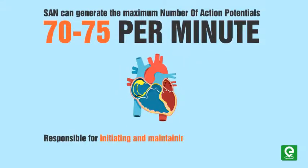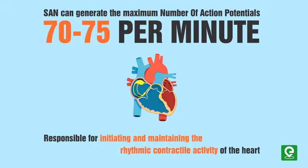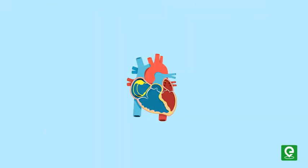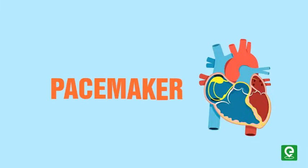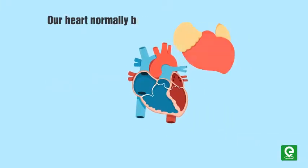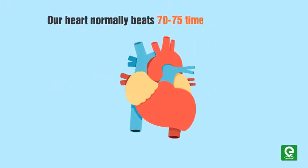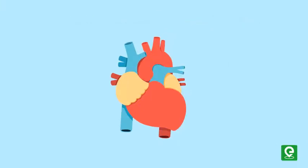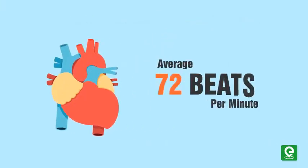The SAN can generate the maximum number of action potentials — 70 to 75 per minute — and is responsible for initiating and maintaining the rhythmic contractile activity of the heart. Therefore, it is called the pacemaker. Our heart normally beats 70 to 75 times per minute, with an average of 72 beats per minute.